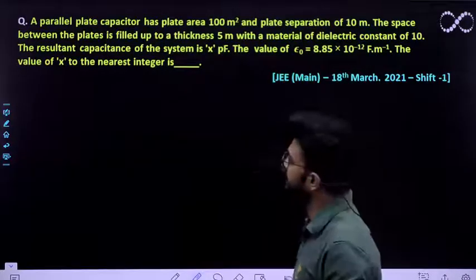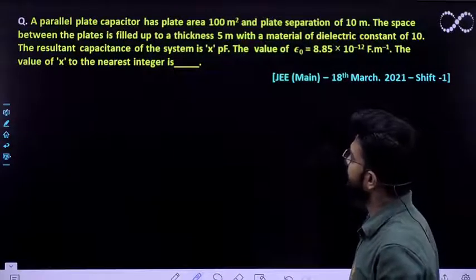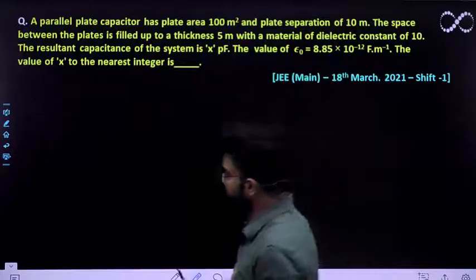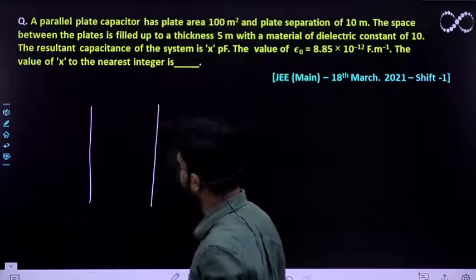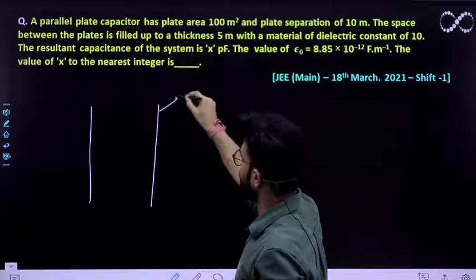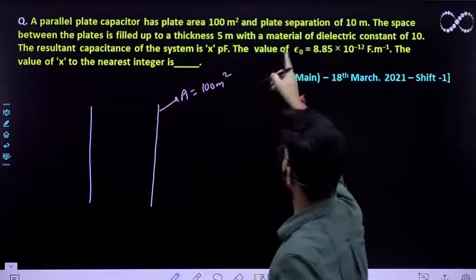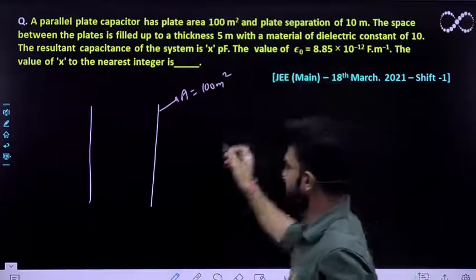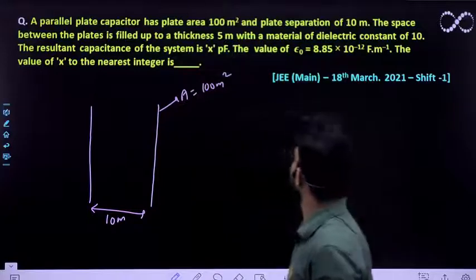When you see the question, what is said? Question says a parallel plate capacitor has plate area 100 meter square. Just as we will visualize a parallel plate capacitor that has been given to you, which area of cross section is already given which is 100 meter square, and plate separation is 10 meter and separation of the plate is 10 meter.